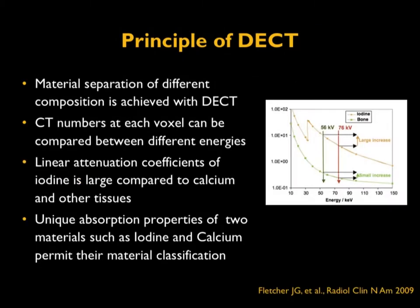Here is the principle of dual-energy CT. It allows for material separation of different compositions. For example, shown here is the separation between iodine and bone. At two different energies, there is a wide difference in the attenuation coefficient — it is quite large for iodine compared to calcium. By introducing iodine and using dual-energy capability, we can separate iodine pixels much more effectively than calcium and other tissues.